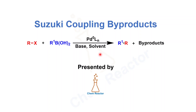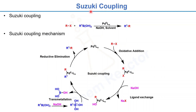Here I've compiled some of the common impurities and byproducts formed in the Suzuki coupling reaction, and if you are working in process development, this will definitely be helpful.